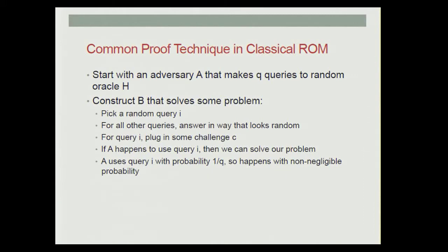The proof technique we analyze is the following. We start with an adversary A that makes Q queries to the random oracle H. Then we construct a new algorithm B to solve some problem. B works as follows: first, it picks a random query I that the adversary makes. For all other queries, it answers in a way that looks random, but for the special query I it responds with some challenge C. The hope is that the adversary will use C to break the scheme, and if it does, we are able to solve our underlying problem. Since we chose the query at random from among Q queries, and Q is a polynomial, this happens with non-negligible probability.